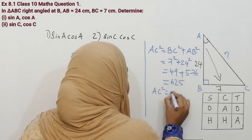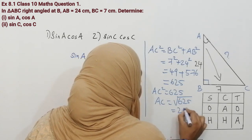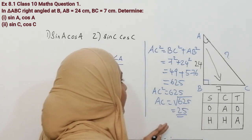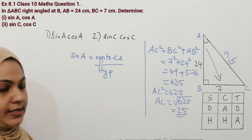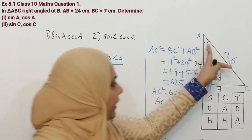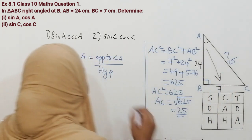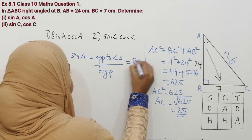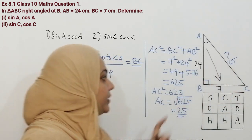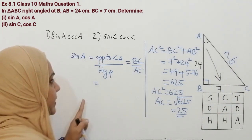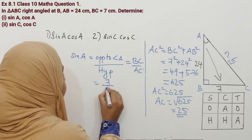AC squared is equal to 625, so AC is equal to the square root of 625, which is 25. We have found the value for hypotenuse — that is 25. Now, the side opposite to angle A is BC, and the hypotenuse AC is 25. BC is 7 and AC is 25.